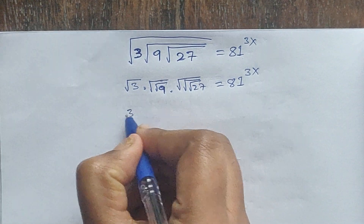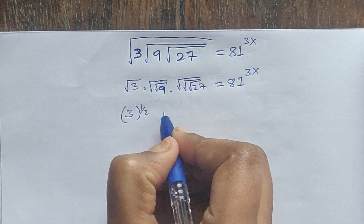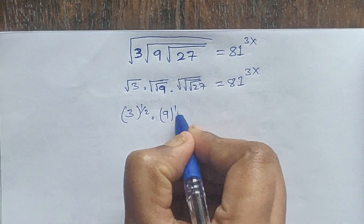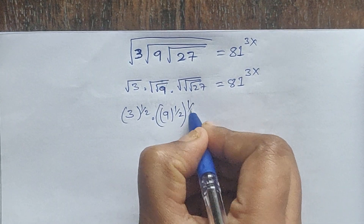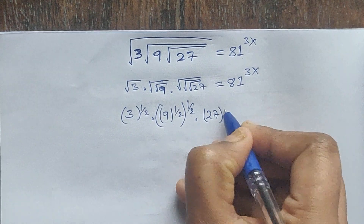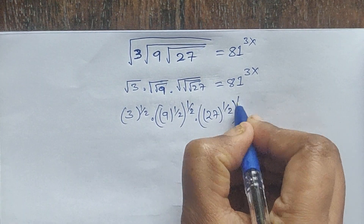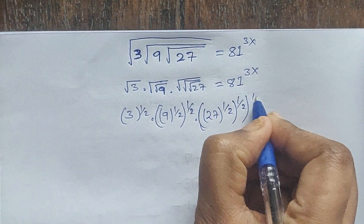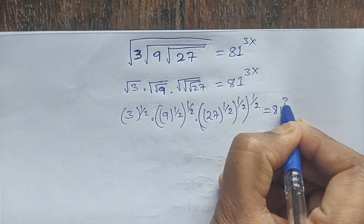So: 3 to the power of 1/2, times 9 to the power of 1/2 whole to the power of 1/2, times 27 whole to the power of 1/2 to the power of 1/2 to the power of 1/2, equals 81 to the power of 3x. Because a square root is the same as a 1/2 power.